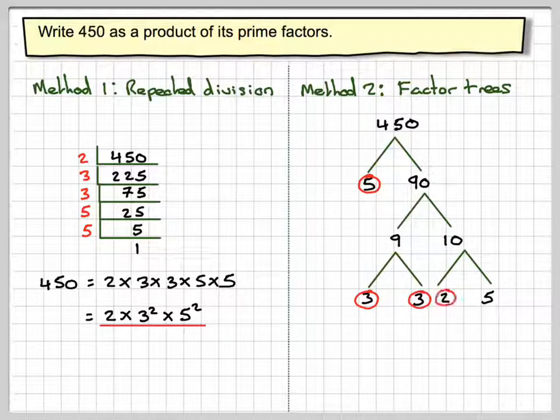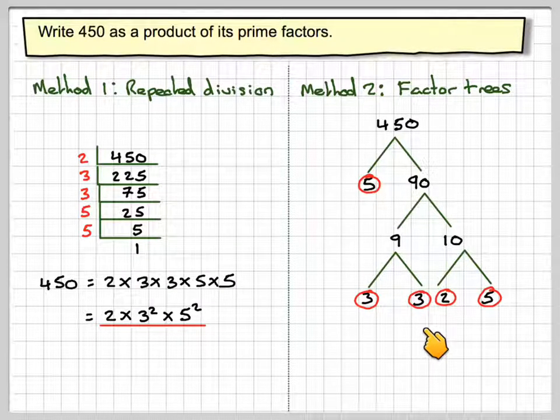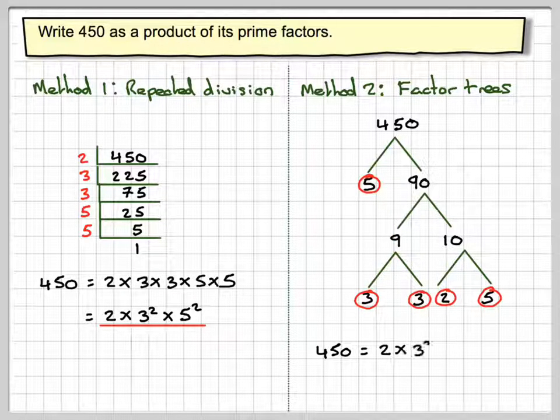We can circle them and we can see again we're going to have two times three times three times five times five. So we have two times three squared times five squared as 450.